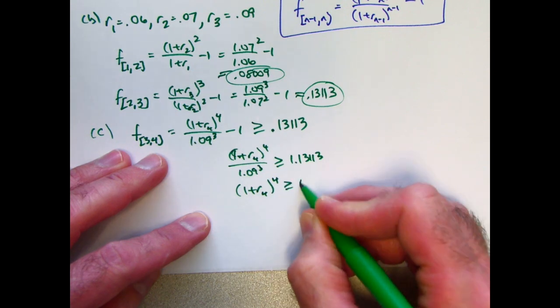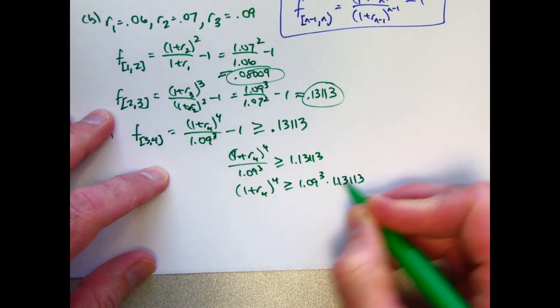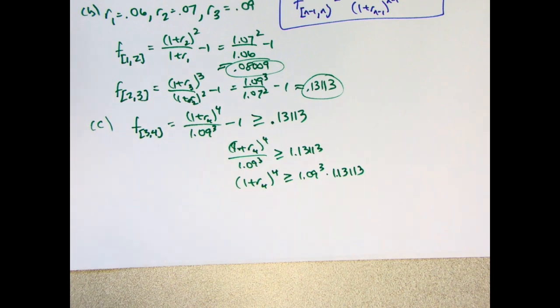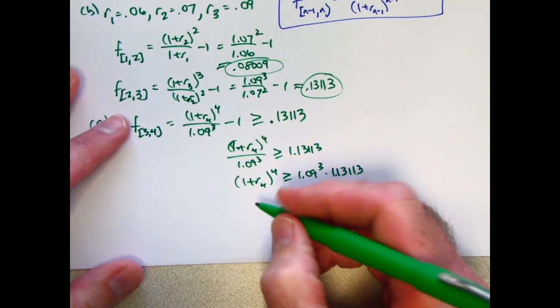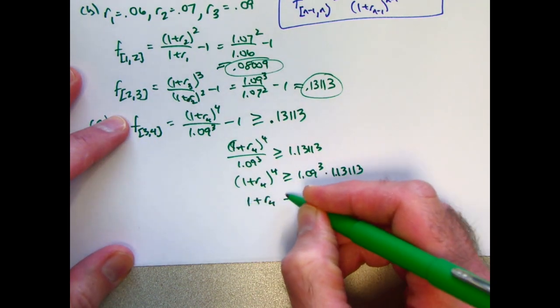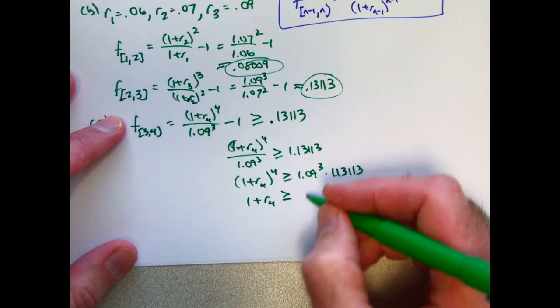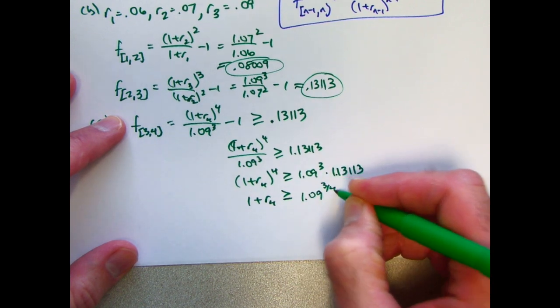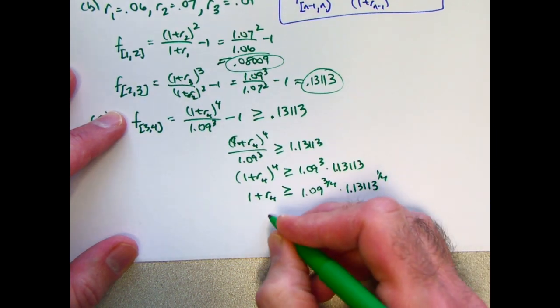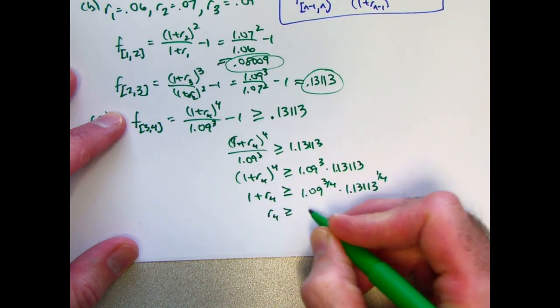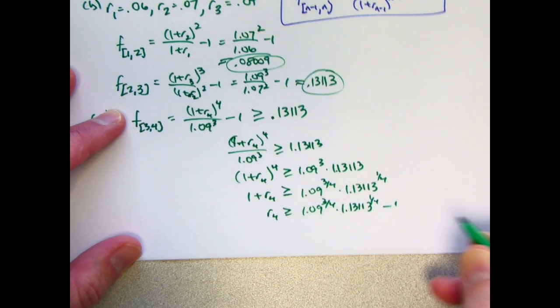Multiply both sides by 1.09 cubed. I'm showing more steps than perhaps I really need to. Multiplying by a positive number keeps the direction of the inequality the same because a positive number times x is an increasing function. We need to take the fourth root of both sides, raise both sides to the 1 fourth power. Raising to the 1 fourth power, x to the 1 fourth, is an increasing function as well for x greater than or equal to 0. This is going to give us 1.09 to the 3 fourth, times 1.13113 to the 1 fourth power. Finally, subtract 1 from both sides. x minus 1 is an increasing function. The inequality stays the same direction all the time.